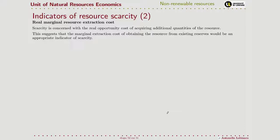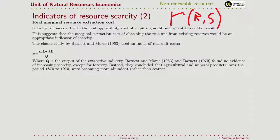A different indicator we could use to look for scarcity of a non-renewable resource is the marginal extraction cost. As we noted when we built our models, the extraction cost depends on the level of resource we extract but also on the stock: the more the stock of the natural resource decreases, the more scarce it becomes, and the higher the real cost to extract it. This idea has been used to build some indicators of scarcity based on extraction cost.